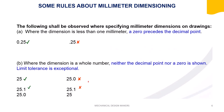The second rule: when the dimension is a whole number, neither the decimal point nor a trailing zero is shown. You do not need to put a decimal point or zero after it. Showing them is the wrong way; omitting them is the right way.